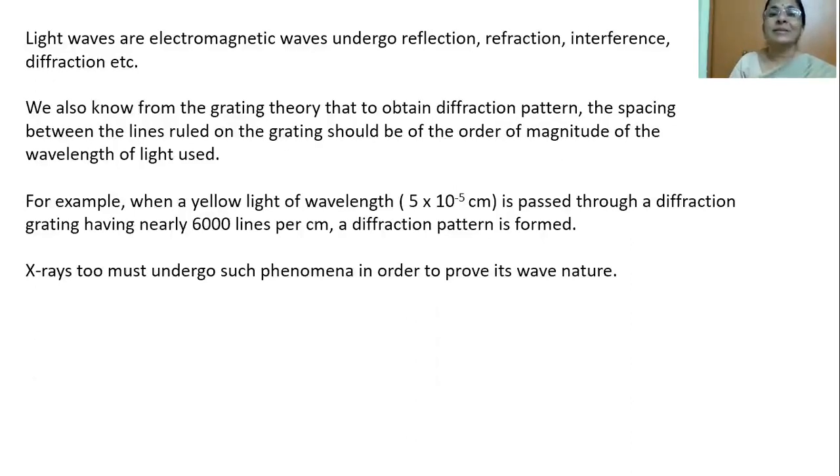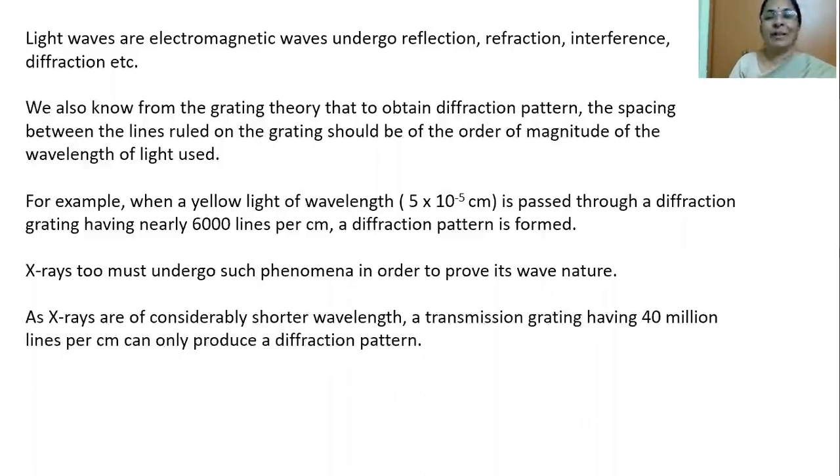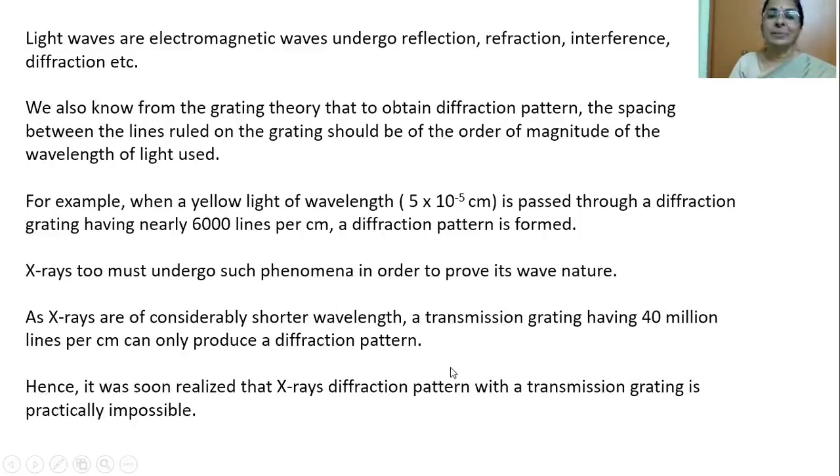But X-rays had very short wavelength. So, X-rays cannot be diffracted by a normal grating. The second theory states that X-rays are electromagnetic in nature. So, if they are electromagnetic nature, it must be having wave nature. So, X-rays too must undergo such diffraction in order to prove its wave nature. As X-rays are of an extremely short wavelength, transmission grating having 40 million lines per centimeter can only produce diffraction pattern. Soon scientists believe that X-rays diffraction pattern with the transmission grating is practically impossible. It is practically impossible because drawing 40 million lines per centimeter on the grating surface is really impossible. So, they realized that X-ray diffraction could not be produced by using normal grating.